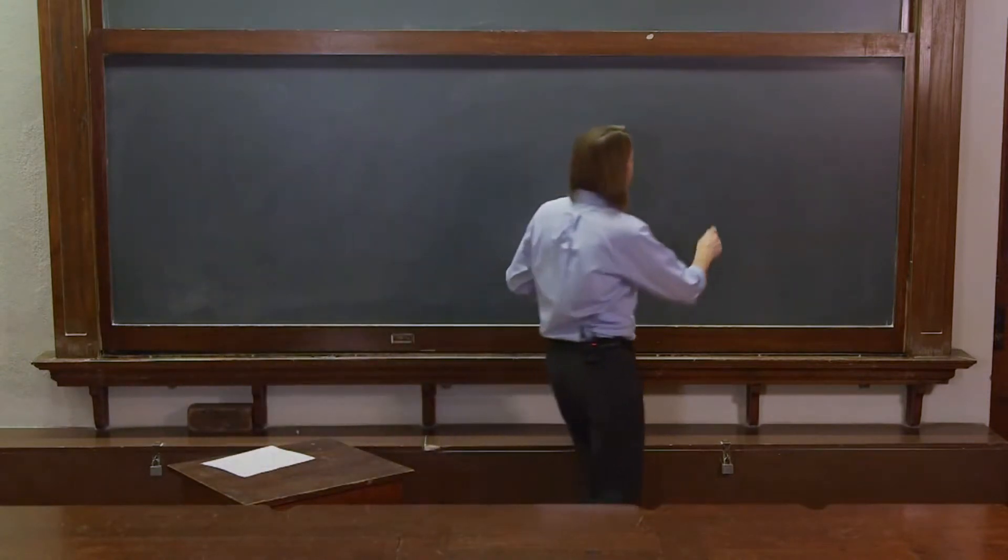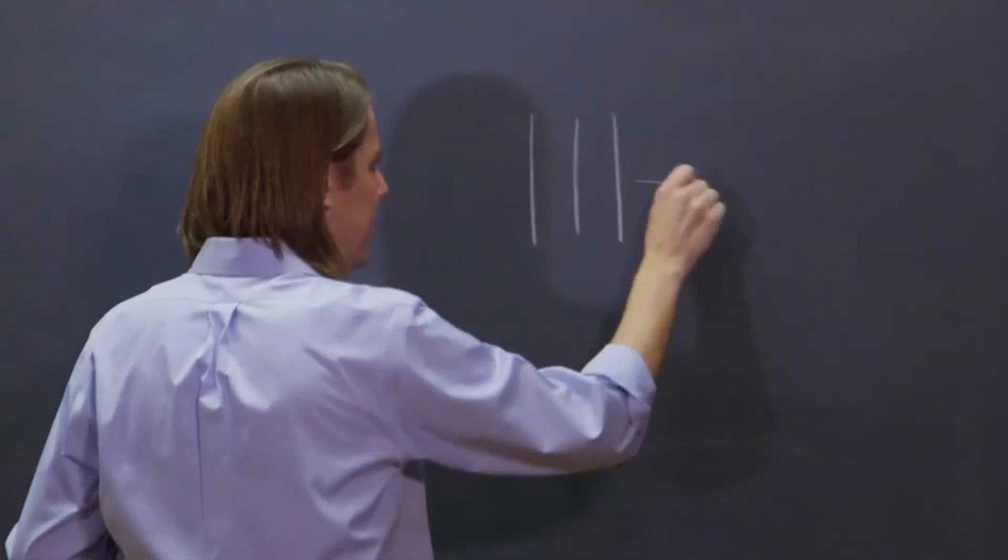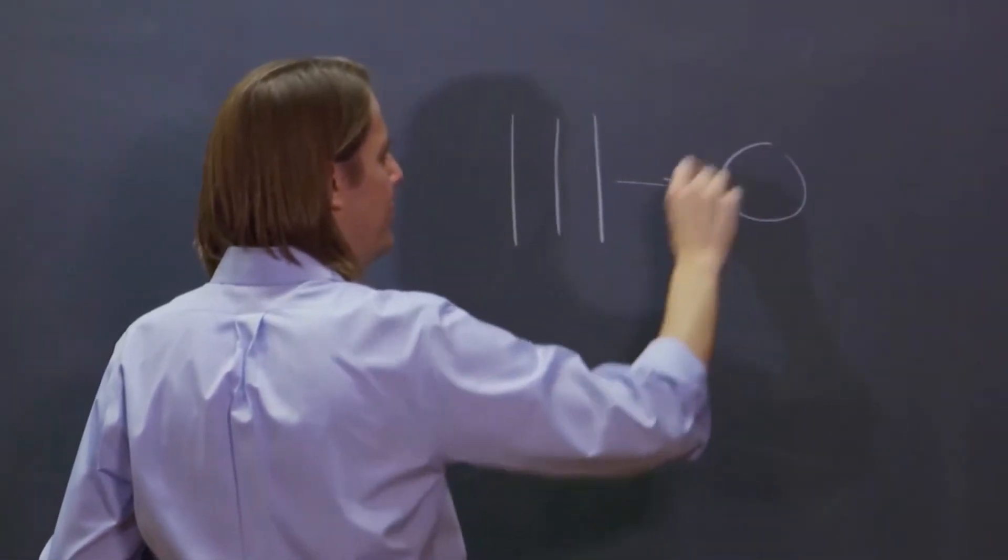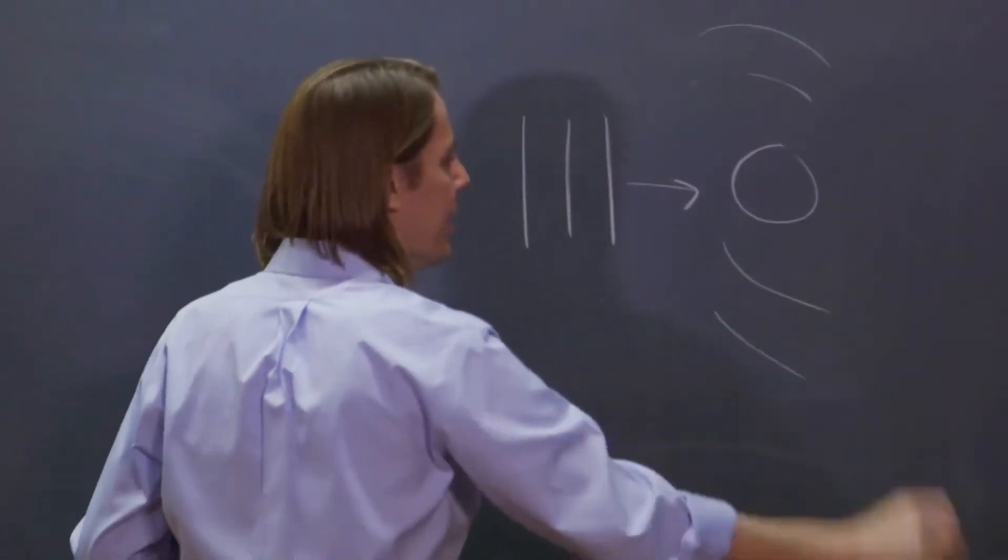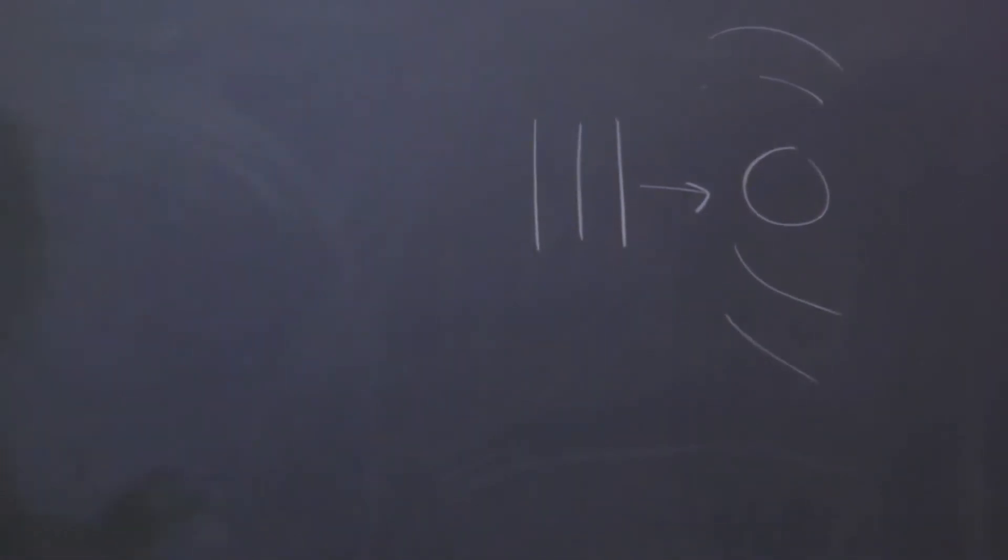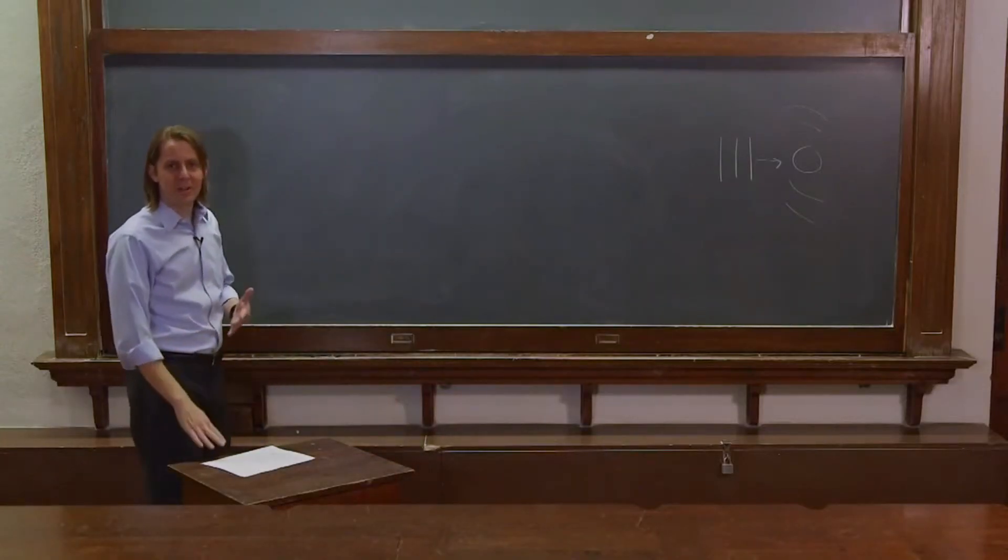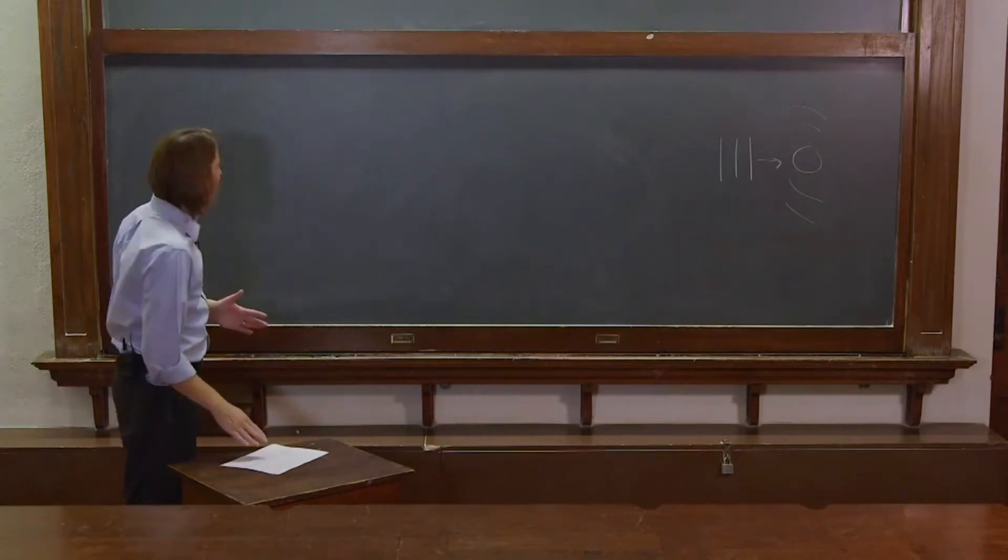So you can often see it drawn very schematically: plane wave, object, and then you get scattering. It sounds fairly simple, but it's actually extremely difficult to calculate. It gets complicated very, very fast.